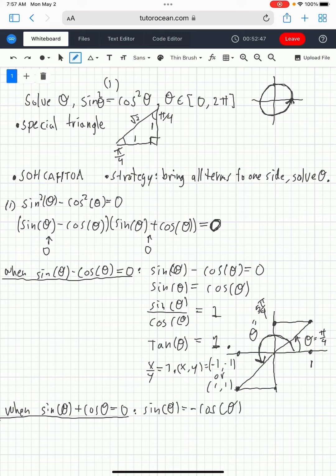when sine theta plus cos theta is equal to 0, then that means that sine theta over cos theta is equal to minus 1, which means tan theta is equal to minus 1.